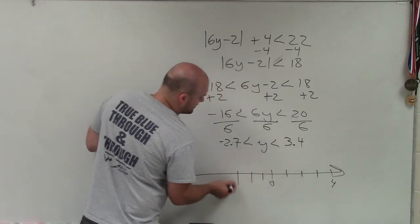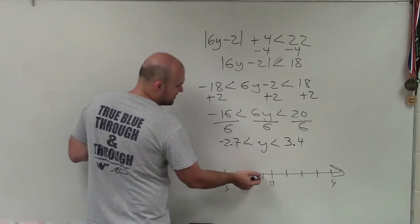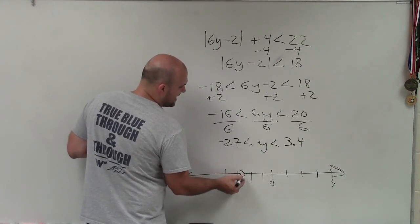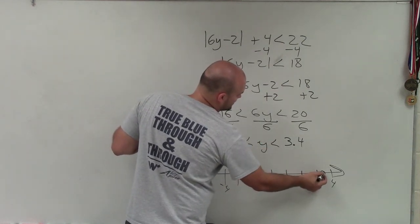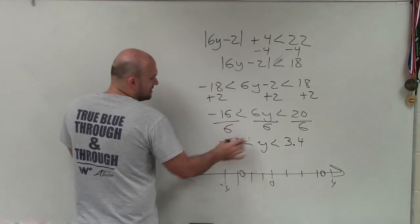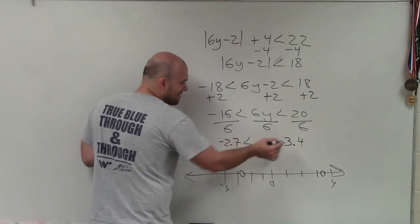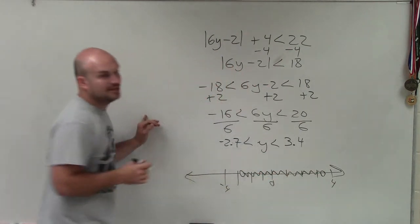Negative 1, 2, 3, 4. You can fill in all the lines if you want to. Negative 2.7 would be somewhere like here. Put in a nice dot. And 3.4 would be somewhere right there. Since it's less than on both of those, those are going to be open circles. And since y has to be greater than negative 2.7 but less than 3.4, our solution set is going to be in between them.